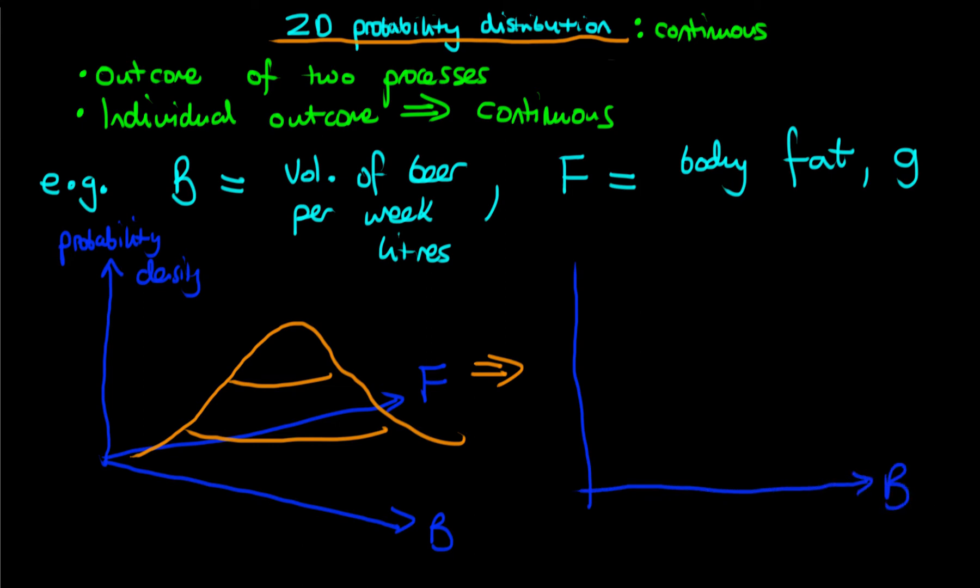So here, the bottom axis will be the volume of beer drunk per week, and then the vertical axis will be an individual's level of fat. Then what we do is we draw contours in our graph, and these contours represent lines which have constant probability density.